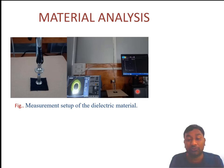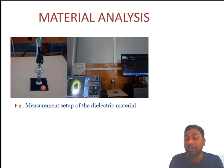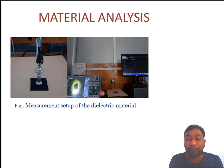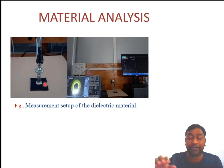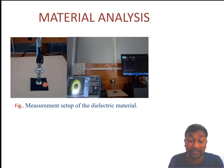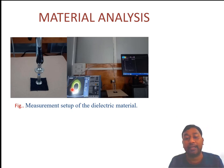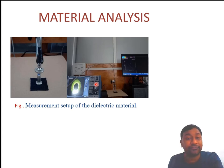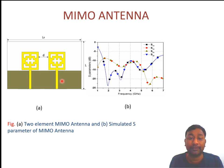First we analyze the substrate. Normally we use different substrates which are available, but in this case we are using a jeans substrate material made of cloth material. For analysis of the cloth material we use this particular cloth substrate to finalize the exact permittivity, permeability, loss tangent, and dielectric properties of the material. This analysis was done using a dielectric assessment kit and a vector network analyzer. In the next phase we design a MIMO antenna with two elements.